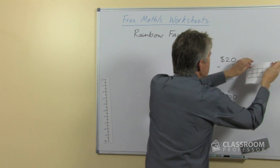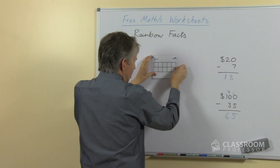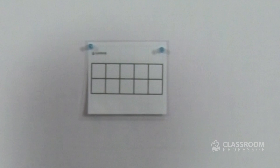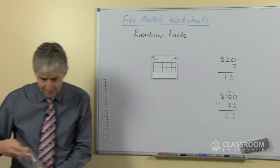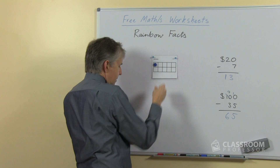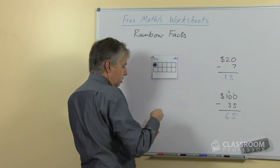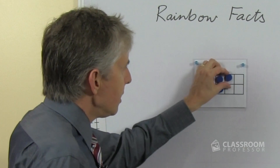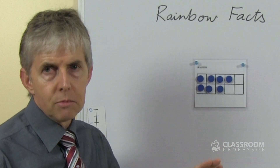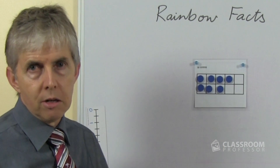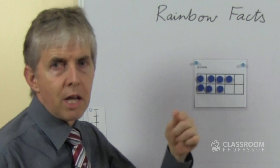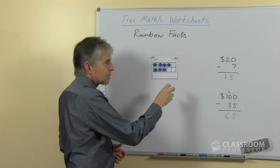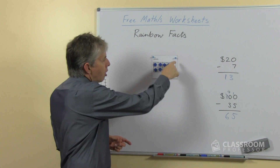Another resource that I've recommended repeatedly in videos is called the 10-frame. It's a simple frame made of 2 rows of 5 squares, and we can use this to represent any number up to and including 10. Basically any number up to 10 can be recognized very quickly — or as we say, subitized — in other words, recognizing how many there are without counting them one by one, simply because of the knowledge of numbers up to 10 and the knowledge that the whole frame contains 10.